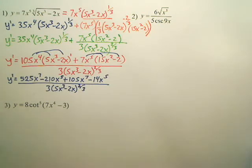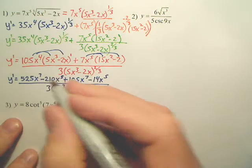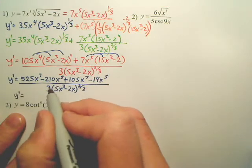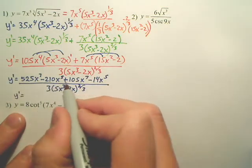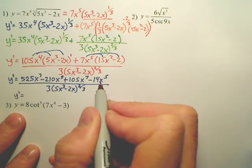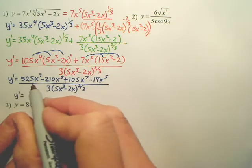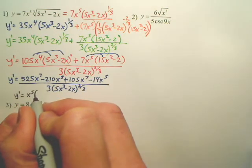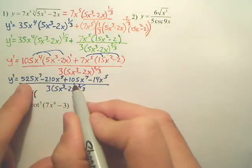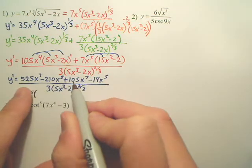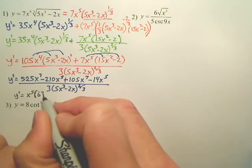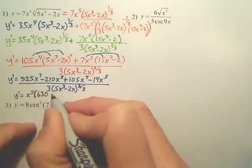And if we want to simplify that nice and neatly, pull out GCFs, and we're done. So, y prime would be, I can pull out, looks like, an x to the 5th. And I really don't know what number goes into all these. Maybe 7 does. I'm not going to mess with it right now. It might be a 7 that goes into all those. But I'm just going to pull an x to the 5th out. Now, oh, by the way, don't these combine? And these combine? So, 525 plus 105 is 630. And then, because these are x to the 7th, this is going to be x squared. And then, negative 210 and negative 14, because you're both x to the 5th, are simply going to be negative 224.